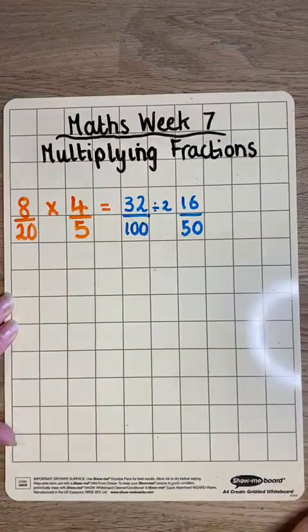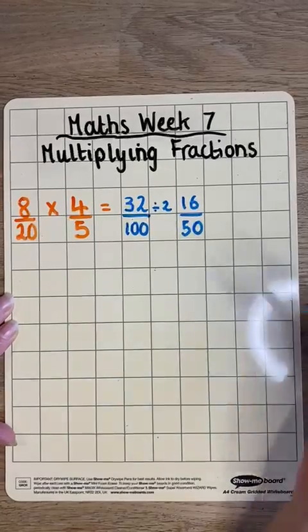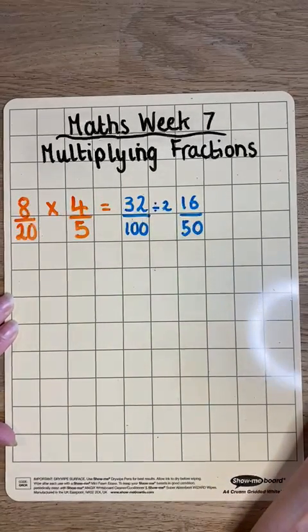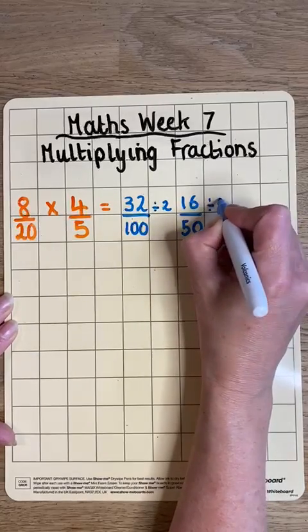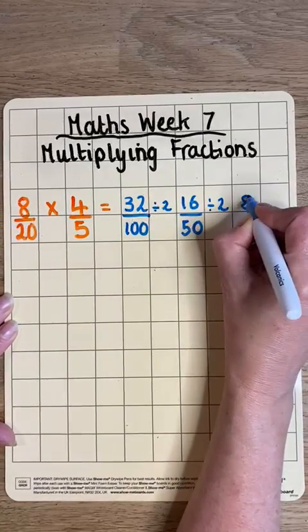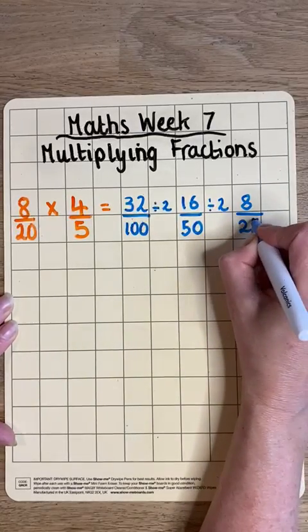So that is a simpler fraction, but it's not yet in its simplest form, because both of these can also be divided by 2. 16 divided by 2 is 8, and 50 divided by 2 is 25.